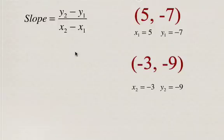We substitute this into our equation, so we're going to sub in for y2 and y1. It's -9 minus -7, and -3 minus 5. Make sure you substitute in correctly.